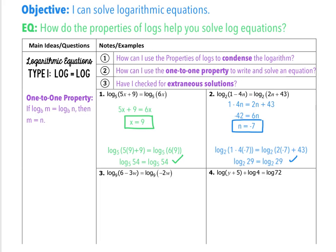Go ahead and pause the video and try number 3 on your own. Hopefully for number 3, you were able to realize that once I solved for w equals 6 and plugged it back in, I ended up with log base 9 of negative 12 equals log base 9 of negative 12. The value makes the equation true, but I can't have a negative log, so the answer is no solution.